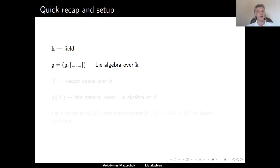We work over an arbitrary field k. We consider g to be a Lie algebra over k. This means that g is a vector space over k equipped with a binary bilinear operation, usually called the Lie bracket, which is assumed to be anti-commutative and satisfies the Jacobi identity.